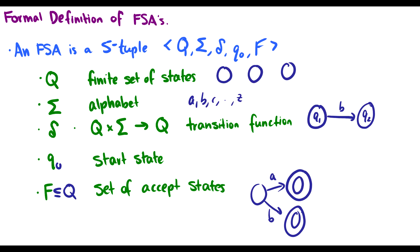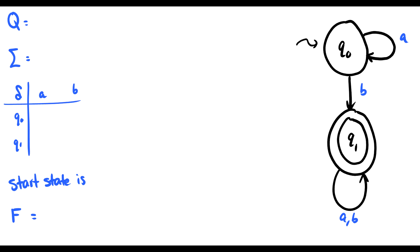So you don't need a picture. You can just list the finite set of states, the alphabet, the transition function, the start state, and set of accept states. And that'd be it. So given this finite state machine, I want to fill out the mathematical definition.